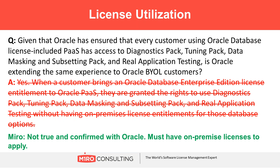This next question was actually wrong on Oracle's site. What was implied was that if you only had an Oracle Database license and wanted to apply it to PaaS — which is sold in tiers — a lower tier includes things like diagnostics pack, tuning pack, and other options. Oracle's documentation said you'd get those options even if you don't already have them on-premise. That is not true — we confirmed this directly with Oracle.